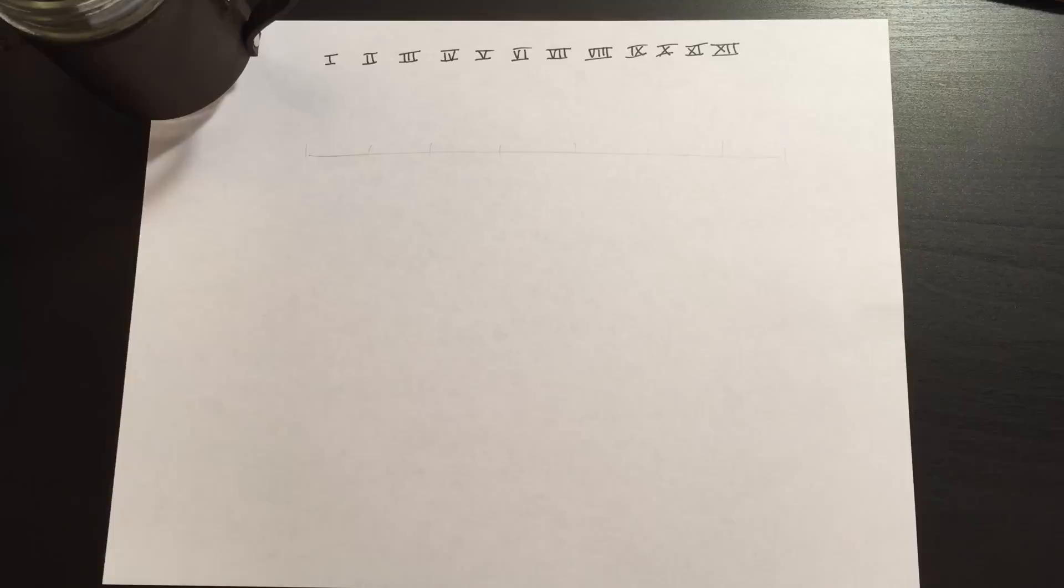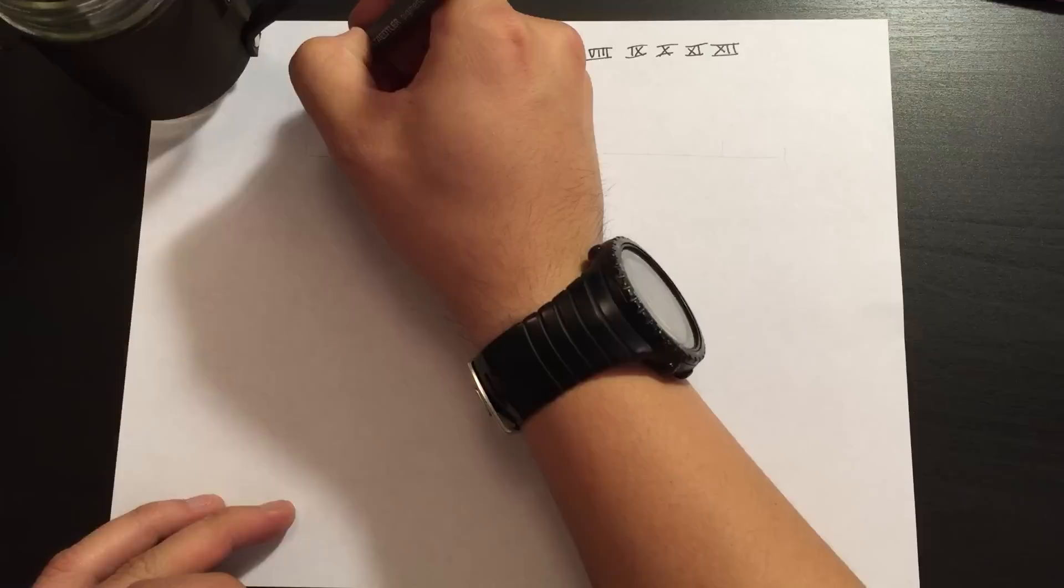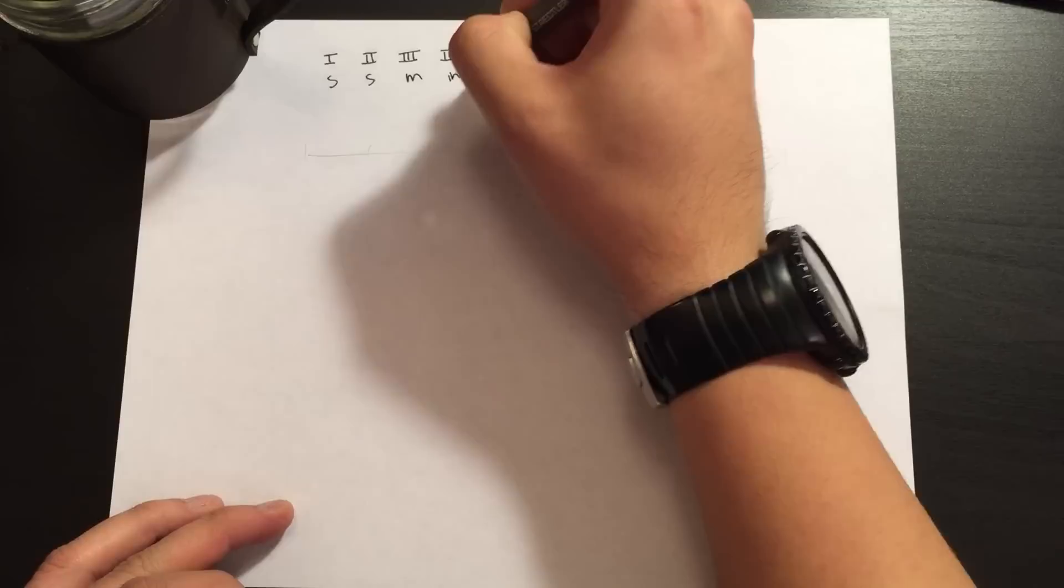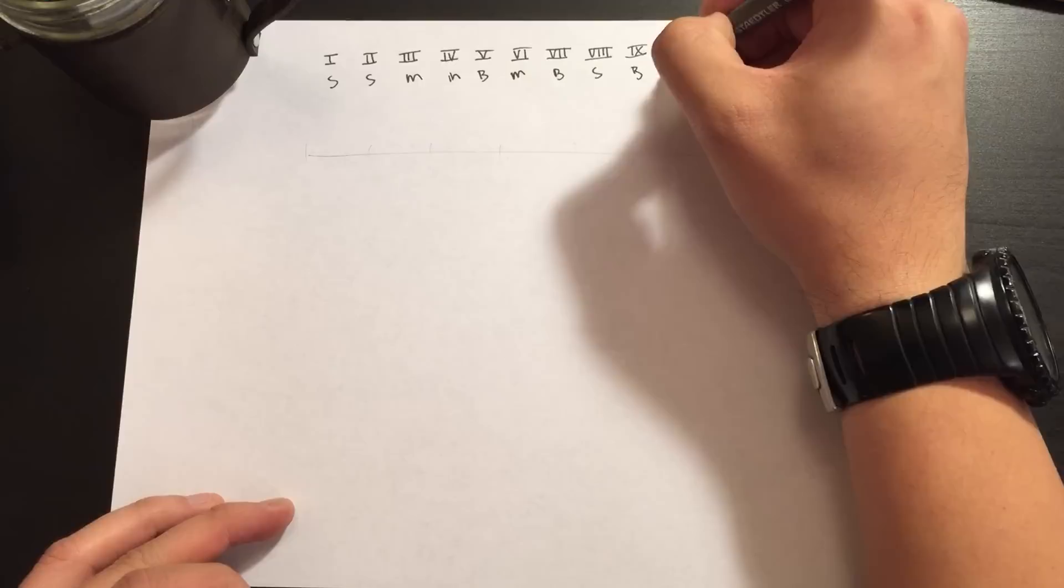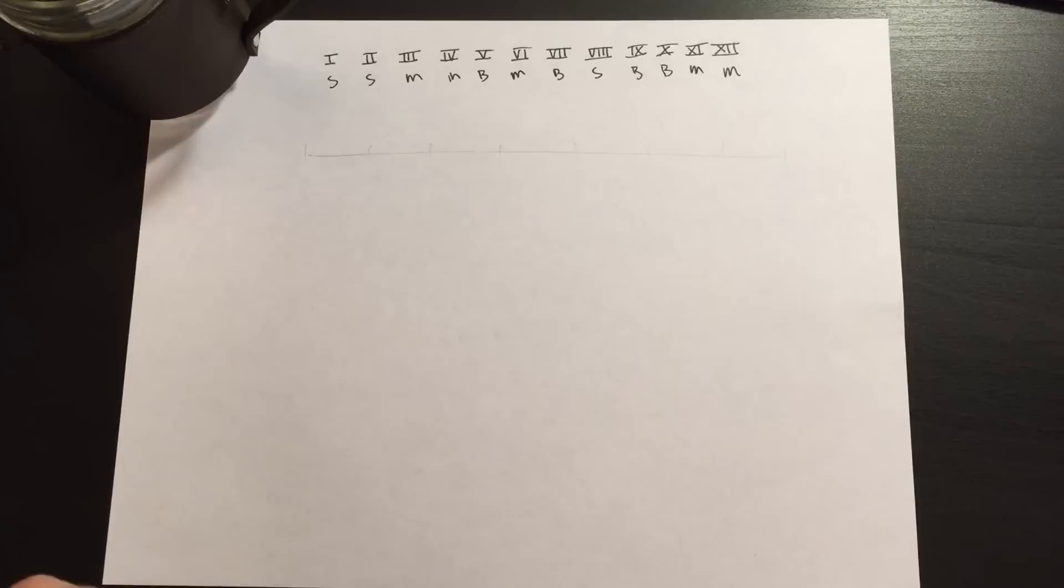Right, so I'm going to write those in here. Some say marry money but my brother says big brains matter most. So some of these fibers, some of these cranial nerves such as kind of one and two are sensory only.